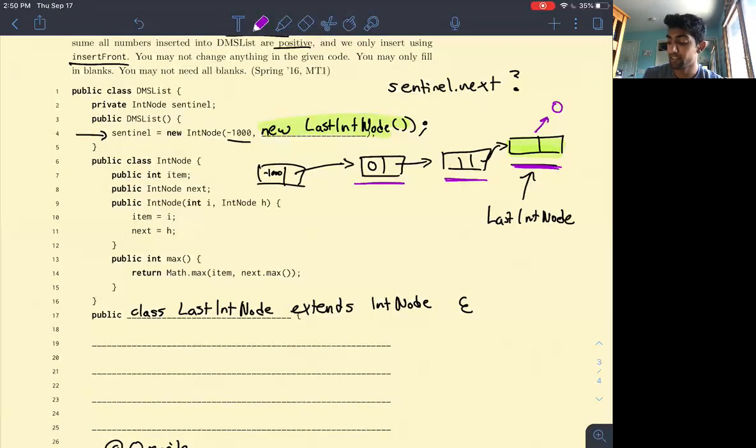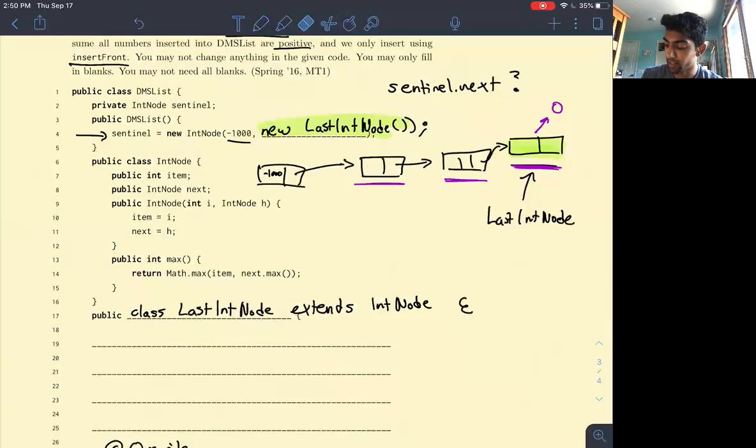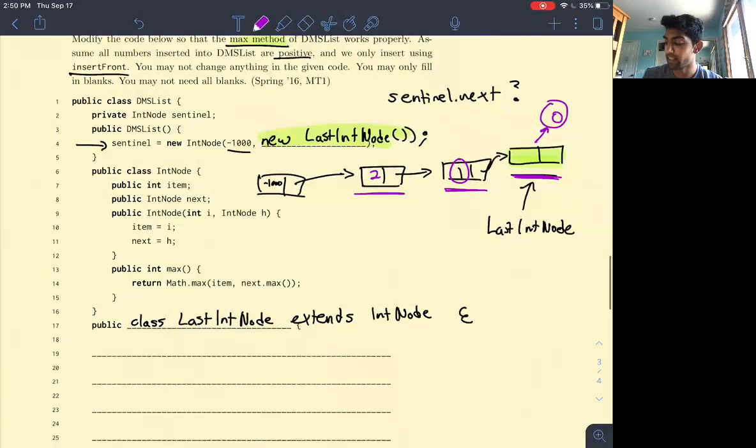Then, since everything is positive, actually, yeah, we should make everything positive. That's my bad. Let's just make this 2. What'll happen is we'll compare 1 and 0, and that'll give us the value 1. Then we'll compare 2 and 1, and we'll figure out the max of this list is 2. So you guys can kind of see that this last int node is acting like a base case in the recursion that stops this function call from going forever.